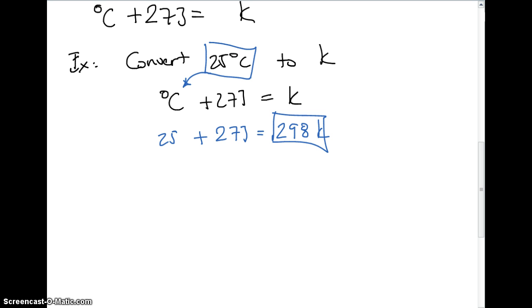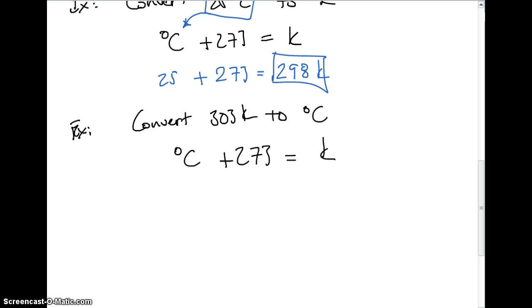We'll do one more problem here real quickly. So we're going to convert 303 Kelvin to degrees Celsius. So again, we're going to use the formula. Degrees Celsius plus 273 equals Kelvin. And what we're going to do is we're going to plug the value of 303 Kelvin in right there. So degrees Celsius plus 273 equals 303 Kelvin.